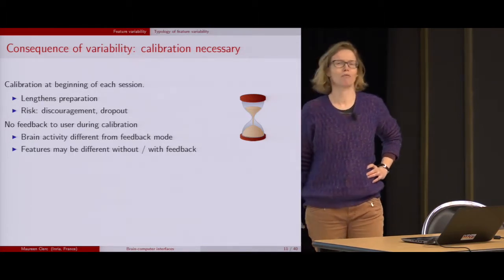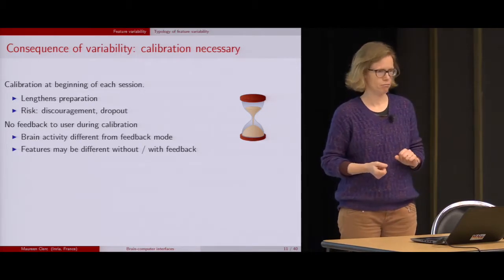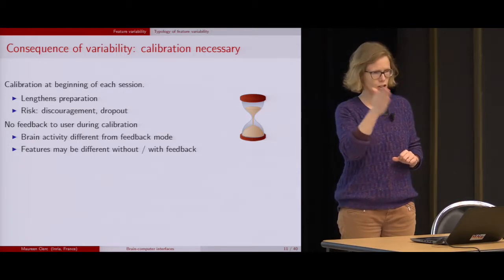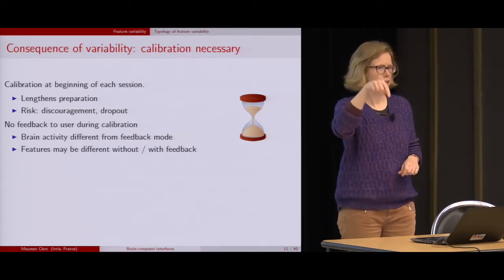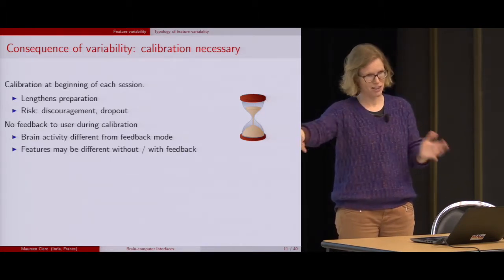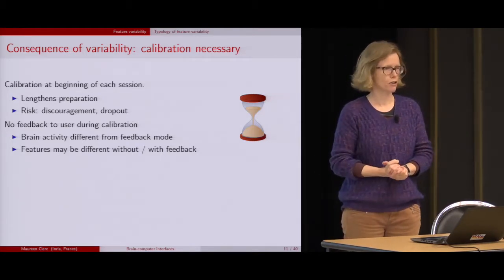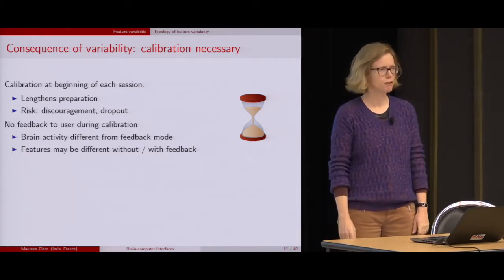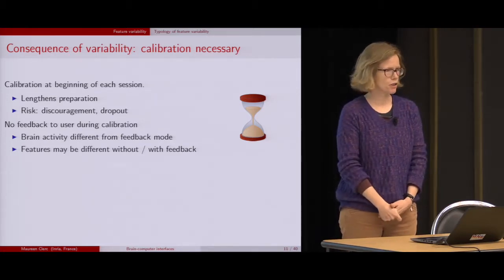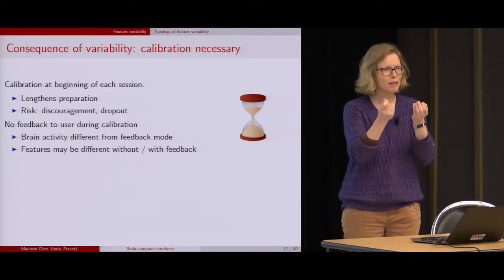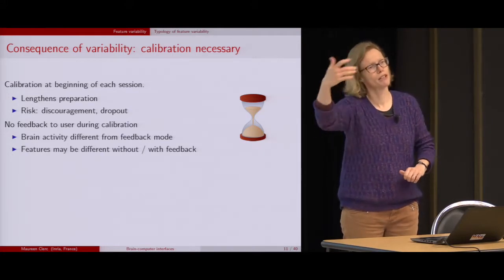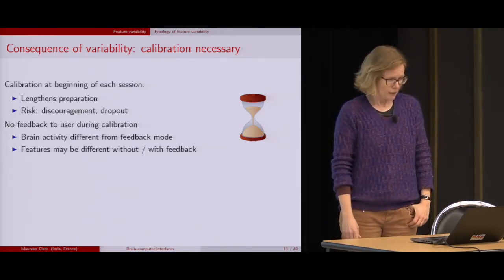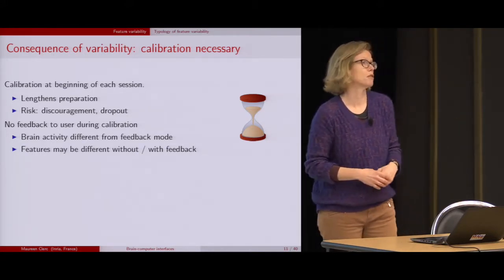One way to overcome these problems is to calibrate at the start of a session. What does it mean to calibrate? It means telling the person what to do at a given time — that way we get labels for this particular person at this particular time. We get a little dataset with labels from which we can learn a new classifier. But this lengthens the process. People get discouraged; they have to spend maybe 10 or 15 minutes doing something useless for them. They don't get feedback because the system is not trained yet.